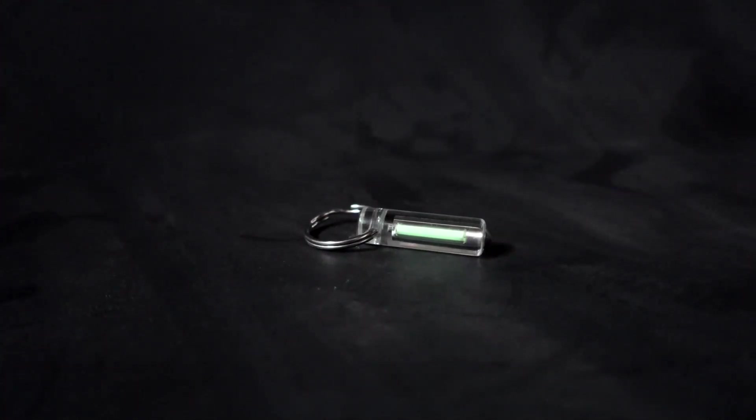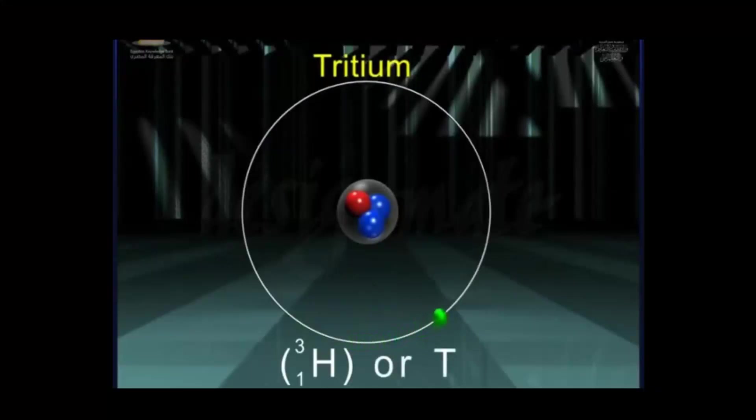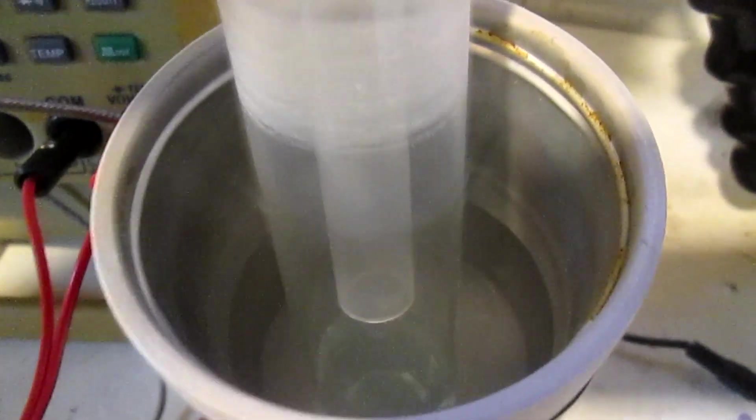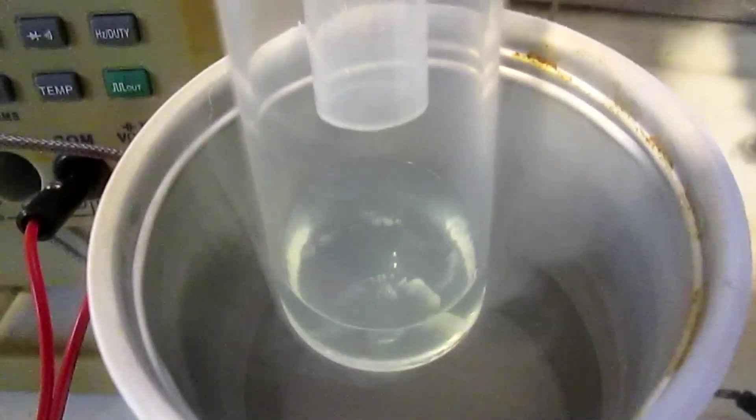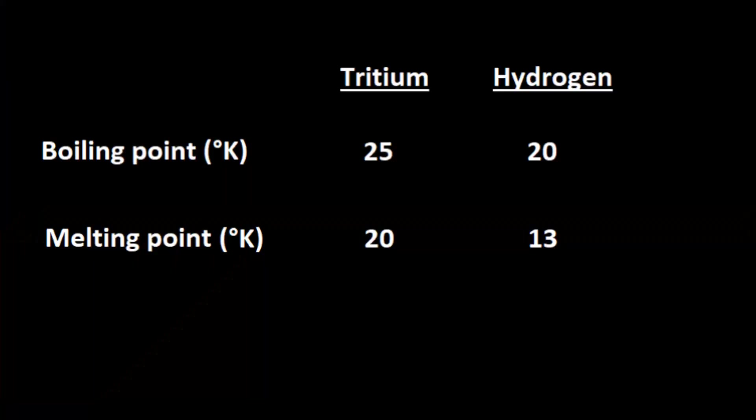With two extra neutrons, the nucleus of Tritium undergoes beta decay to Helium-3. An interesting consequence of this transformation is the melting and boiling point of Tritium. Tritium melts 7 degrees warmer than hydrogen and boils 5 degrees hotter.